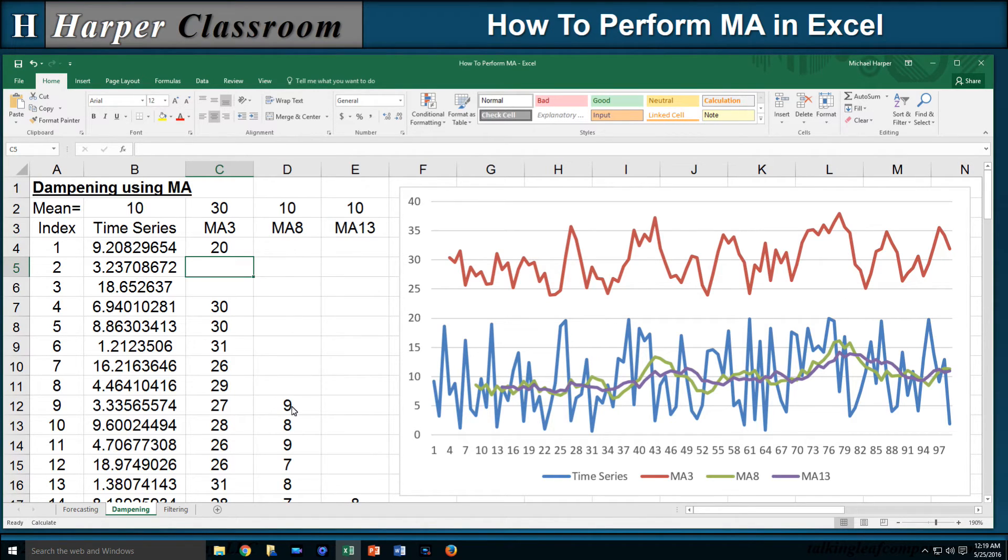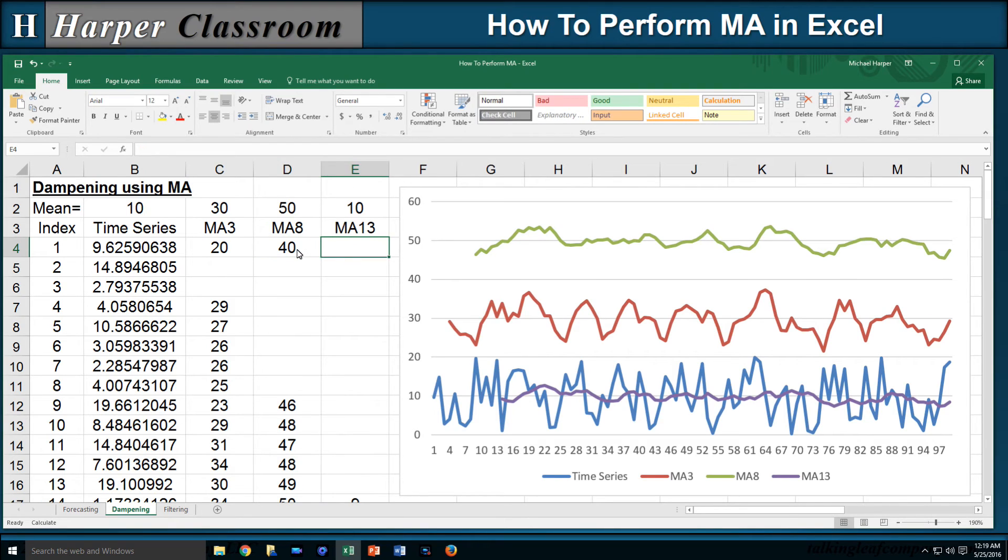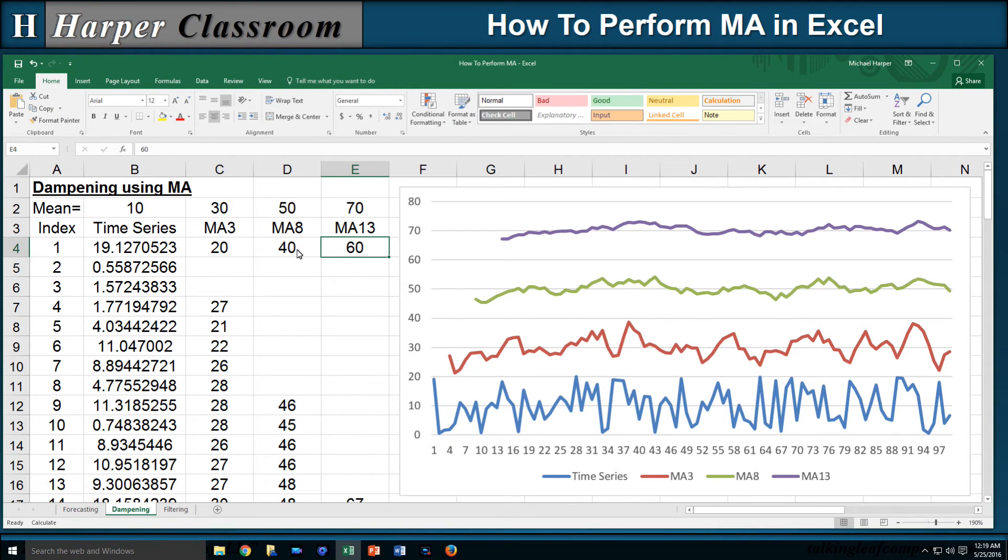Let me do the same thing with moving average of 8. Let me add 40. For moving average of 13, let me add 60. So all I'm doing is adding 20, 40, and 60 to MA3, 8, and 13 so I can compare.